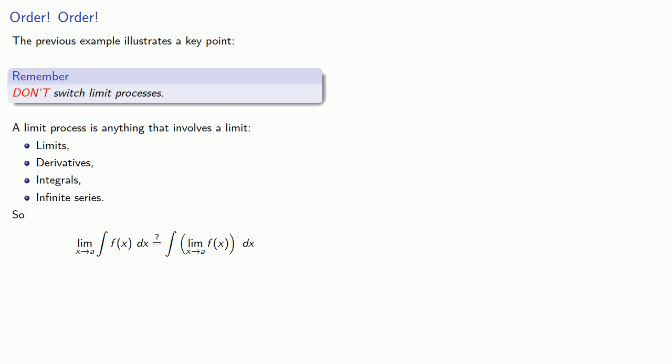And the important idea here is that if I have two limiting processes, for example the limit of an integral, I can't generally switch them to be the integral of a limit. And if I do I can't guarantee that they're going to be equal, or in fact have anything to do with one another. And this is an important idea to keep in mind, because you're about to have a bunch more limiting processes available to you.